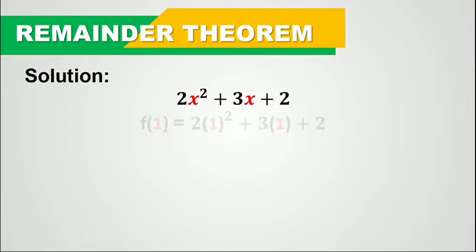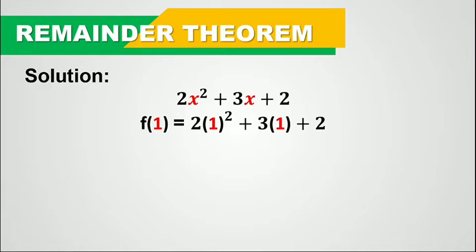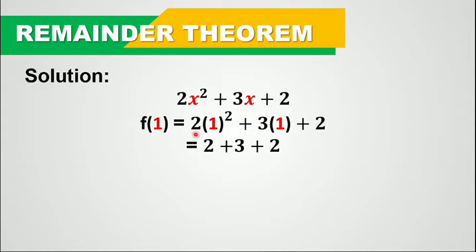So we have here f of 1 equals — let's substitute 1 to the variable x. So we have 2 times quantity 1 squared plus 3 times quantity 1 plus 2. So let's solve it. We have 1 squared, that is just 1, so times 2, that is 2.